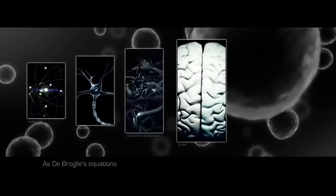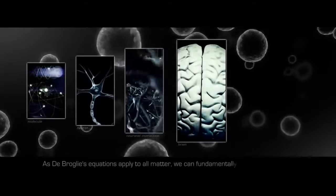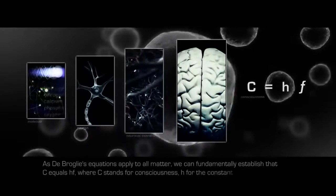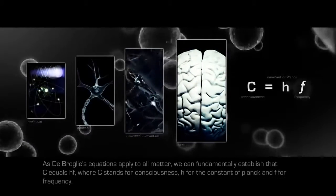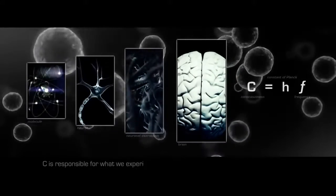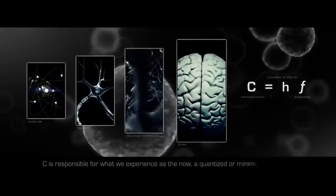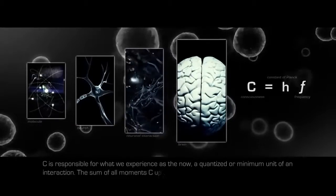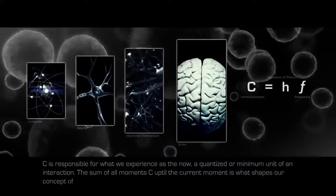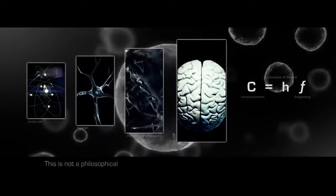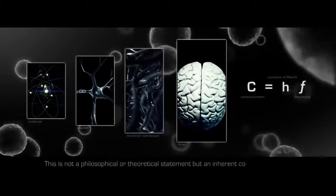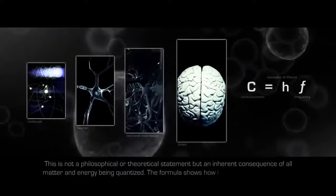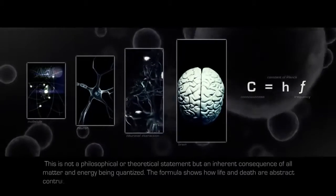As de Broglie's equations apply to all matter, we can fundamentally establish that C equals HF, where C stands for consciousness, H for the constant of Planck, and F for frequency. C is responsible for what we experience as the now, a quantized or minimum unit of an interaction. The sum of all moments C up till the current moment is what shapes our concept of life. This is not a philosophical or theoretical statement, but an inherent consequence of all matter and energy being quantized. The formula shows how life and death are abstract constructions of C.